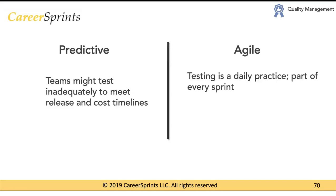In agile, testing is a daily practice and a part of every sprint. With continuous integration, developers integrate their code to the main code branch at least once every day, checking the quality of their work and ensuring it integrates successfully. Any bugs or issues found are eliminated on a daily basis. Combined with the definition of done at the end of every sprint, the amalgamation of agile practices means the overall quality of testing — and therefore the product — is much better.